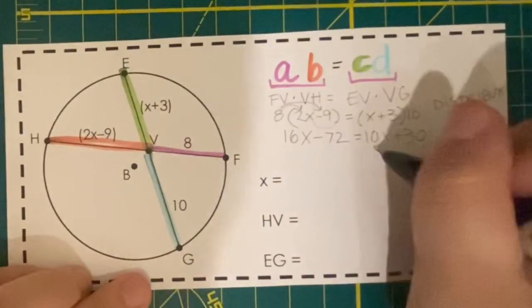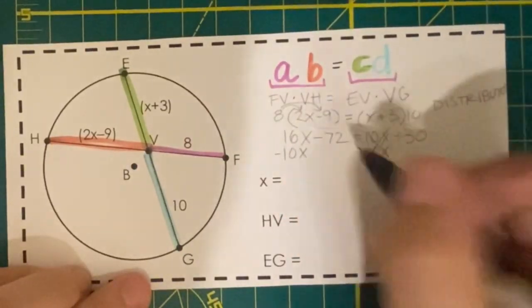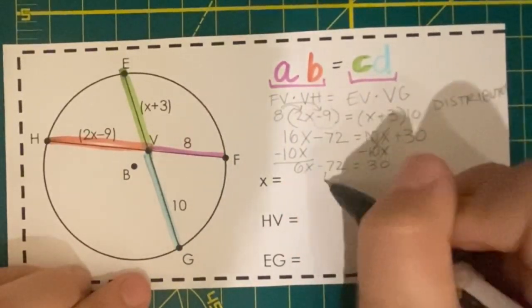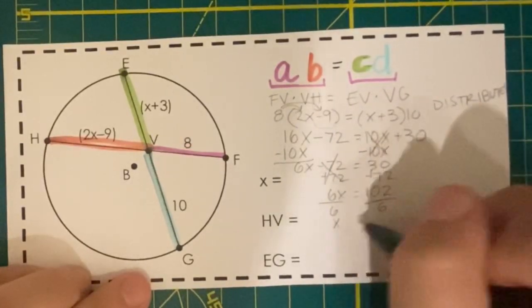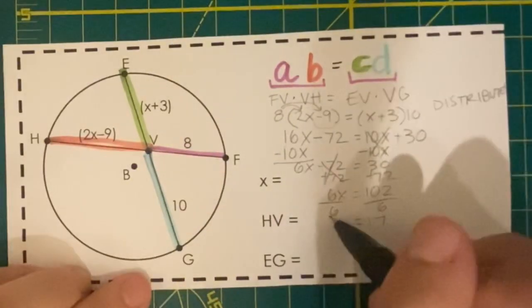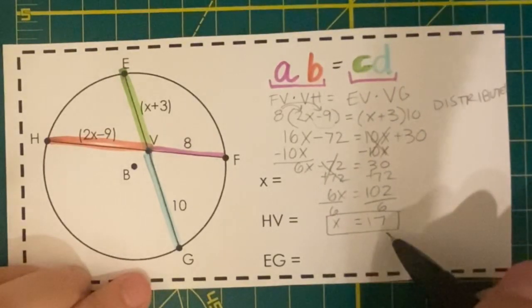I have 16x, 10x. I'm just going to solve like normal. And we found that x equals 17.